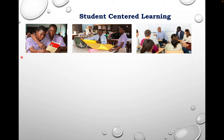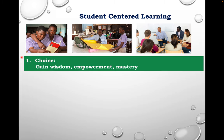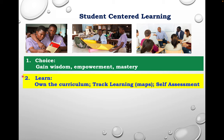Student-centered learning involves four pillars. First is choice — the student makes a choice to gain wisdom, empowerment, or mastery of a subject. Secondly, they agree they are going to learn, and in doing so they own the curriculum. We need to give students this curriculum. Students should be able to track their learning using learning maps provided by the lecturer, and perform self-assessment to find out how much they know.